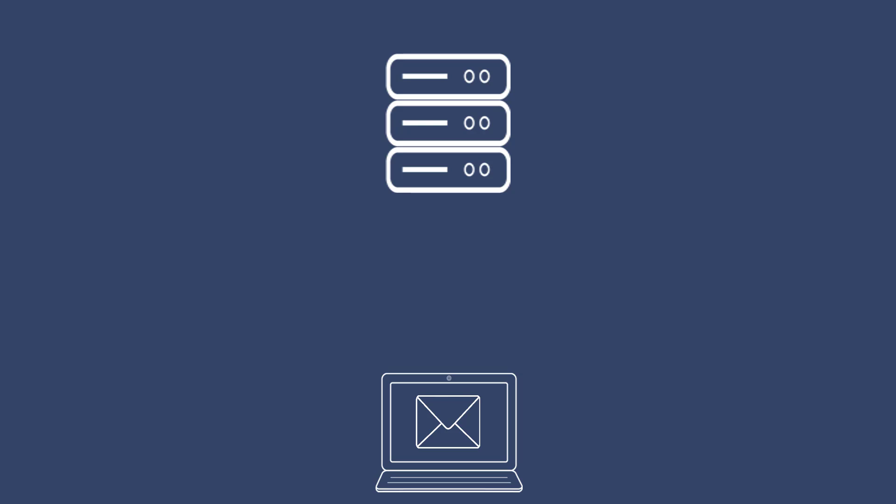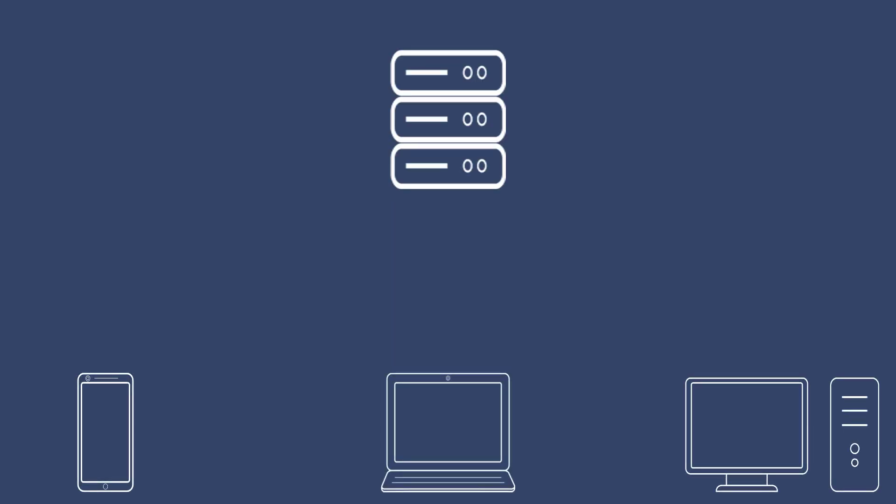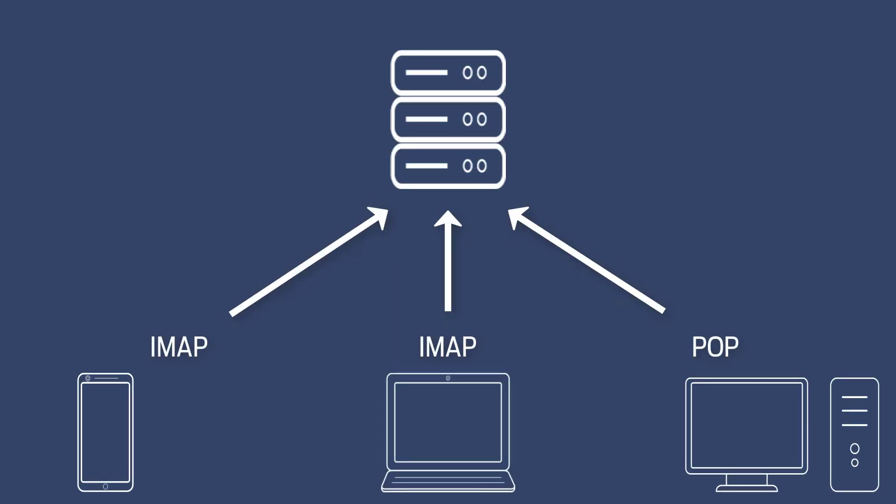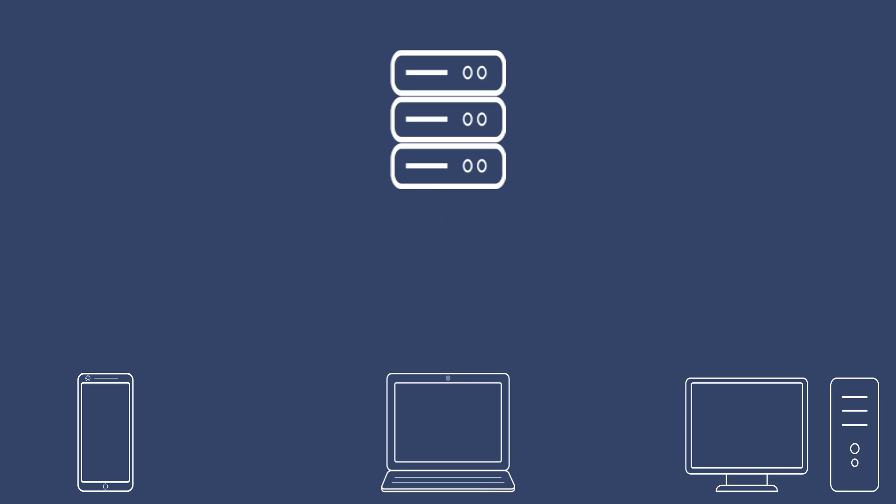Just remember, you have to choose when you connect your device to that mailbox whether it uses POP or IMAP, and it can't be changed later on — you have to re-add the mailbox if you want to change it. It's possible to have some devices connected using IMAP and some using POP, but if you do this you can run into problems with mail not syncing. For example, if you'd read a mail on a device connected via POP, it's not going to sync with the devices connected using IMAP, so it's generally recommended to stick to one protocol.